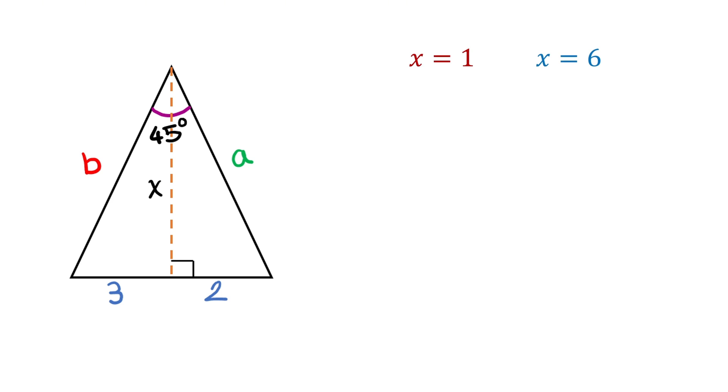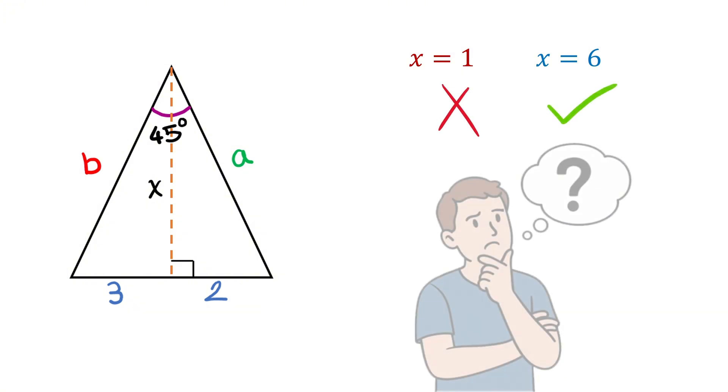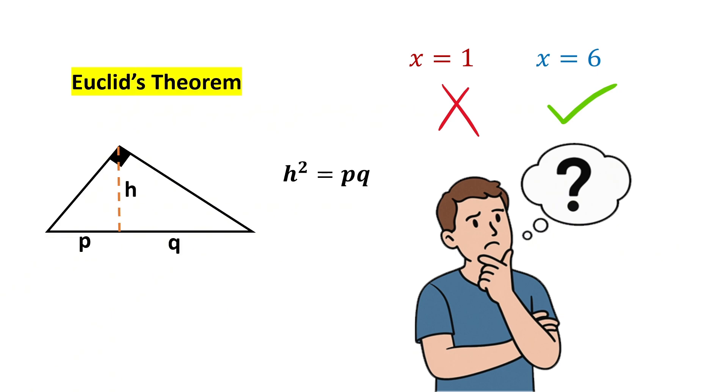But, out of these two values, x equals 6 is the correct answer. Can you let me know why in the comments? Hint is to use Euclidean theorem, which is this.